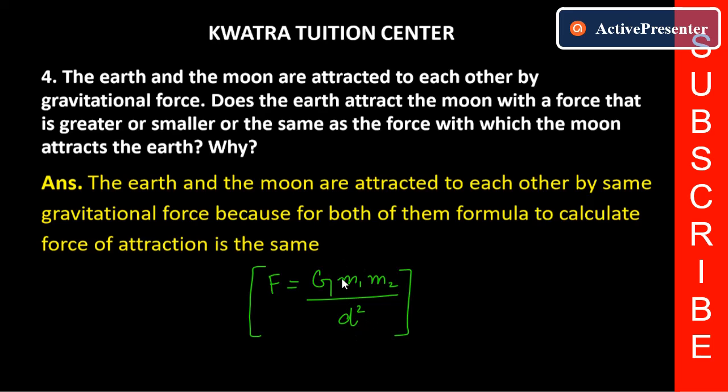m1 means mass of earth, m2 means mass of moon. So if you have a gravitational force, the formula is the same. And if the formula is the same, that means the force is the same.